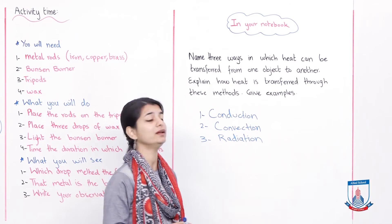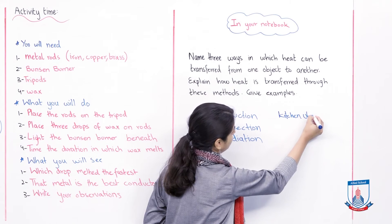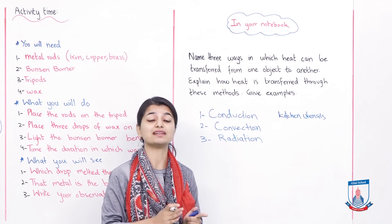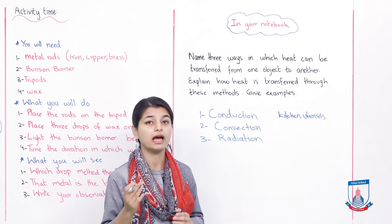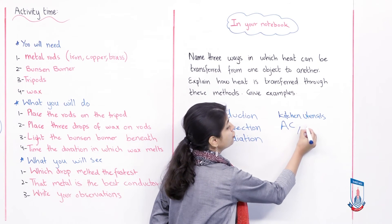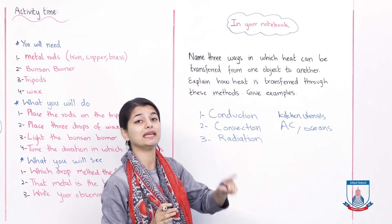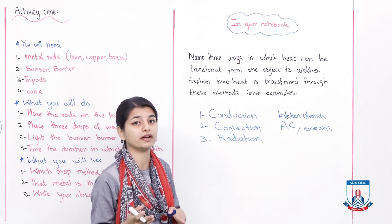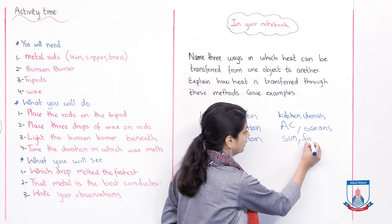An example for conduction can be kitchen utensils, or a metal rod. For convection: it happens in gases or liquids — when you heat a molecule it moves around and transfers heat because of its movement, it doesn't just vibrate in one place. Examples include AC, oceans, and the atmosphere. For radiation: very simple — any heat that an object gives off, we call that radiation. Examples are the sun and fire. So name the method, explain it, and add an example.